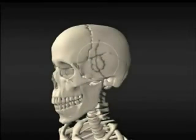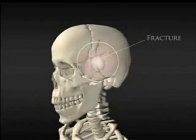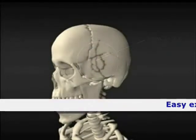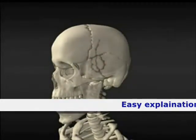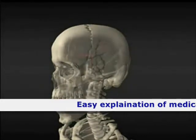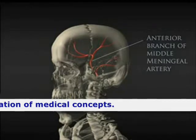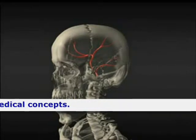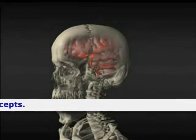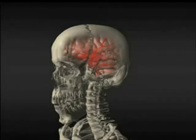Due to an impact to the lateral aspect of the skull, there is a fracture of the temporal bone, resulting in damage to the underlying middle meningeal artery located beneath the temporal bone. Tearing of this artery results in hemorrhaging and an accumulation of blood between the skull and the membranes that surround the brain.